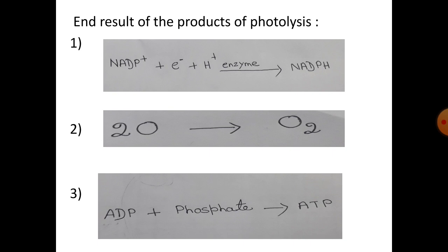NADP means nicotinamide adenine dinucleotide phosphate, and they form NADPH. Oxygen component is given out as molecular oxygen. And the electrons are used in converting ADP, adenosine diphosphate, into ATP, adenosine triphosphate.